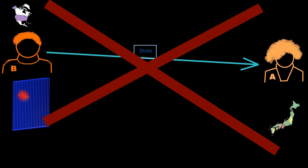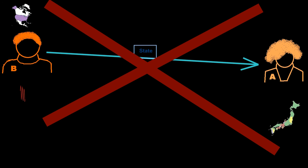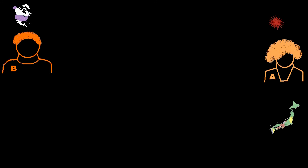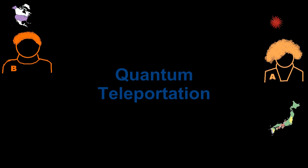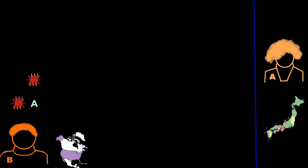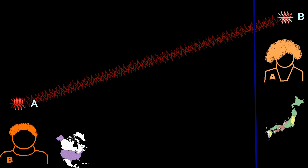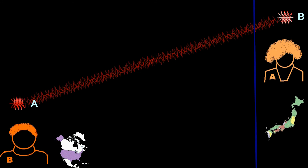Copying one photon's state to another is impossible by normal means, but it is possible in a quantum way — quantum entanglement can make this porting possible. Let's see how quantum teleportation works. Bob creates two photons, A and B, which are entangled, and sends photon B to Alice. Both A and B remain entangled even when separated by a long distance.